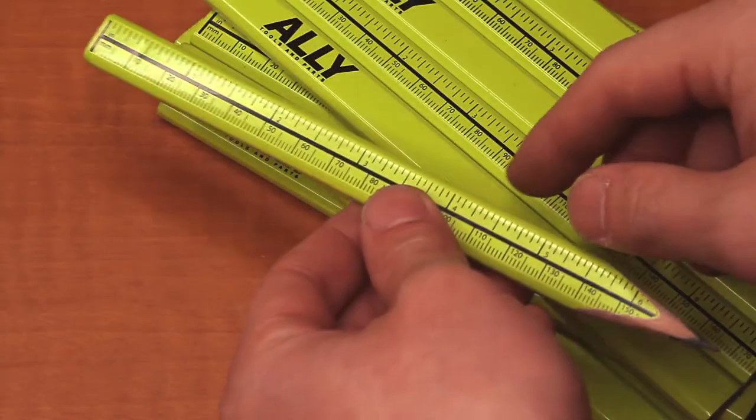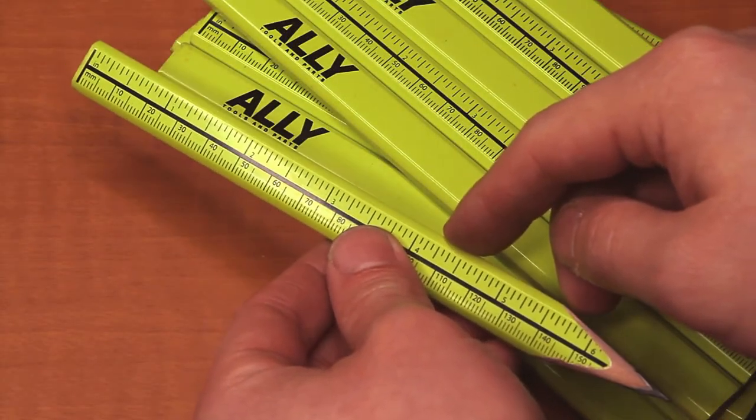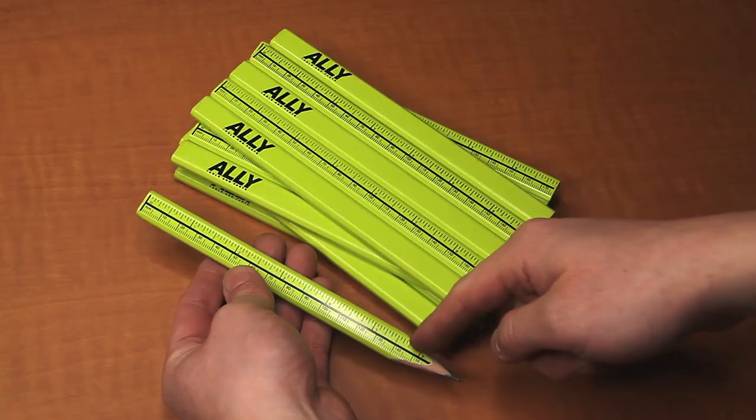Our Carpenter pencils have a yellow-green neon finish, which makes them easy to find whenever you misplace them.